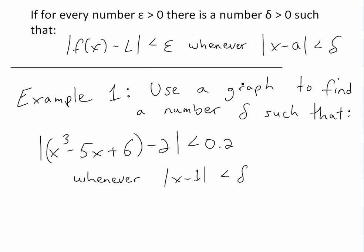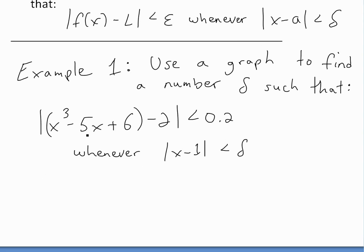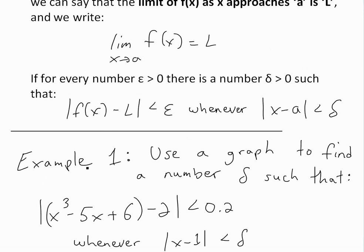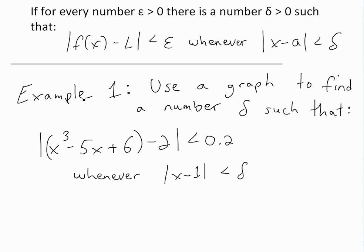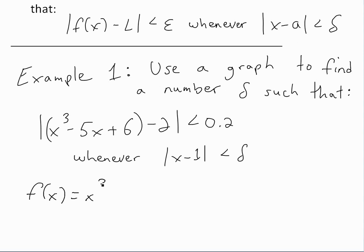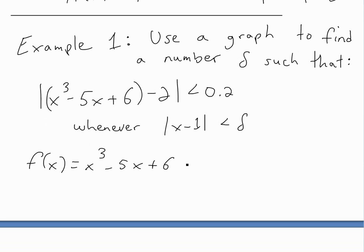Example one states: use a graph to find a number delta such that the absolute value of x cubed minus 5x plus 6, minus 2, is less than 0.2 whenever the absolute value of x minus 1 is less than delta. This is exactly what the precise definition of a limit is, but now we're using numbers. Comparing to the definition, f of x equals x cubed minus 5x plus 6.